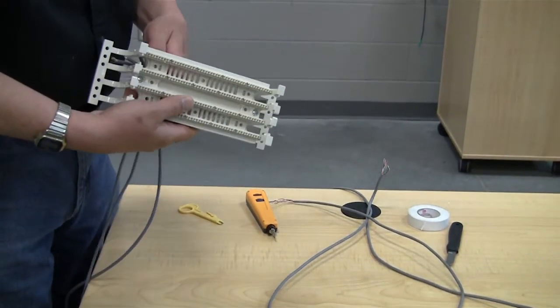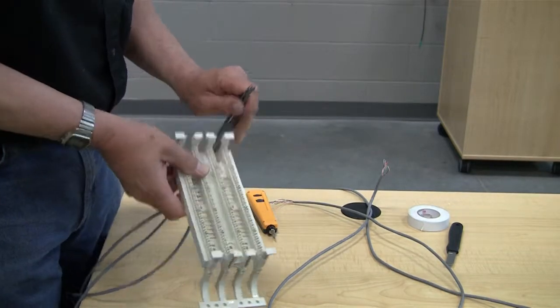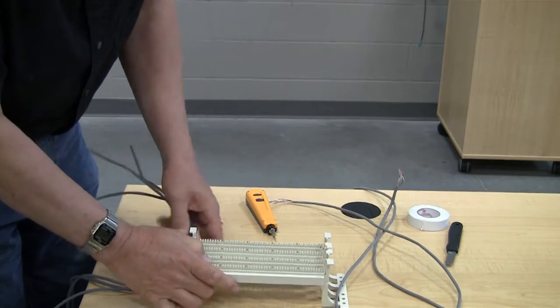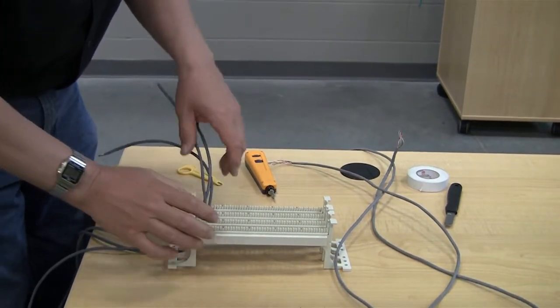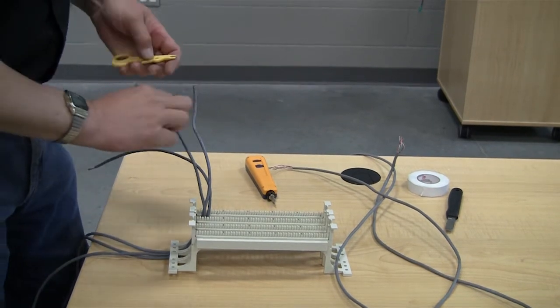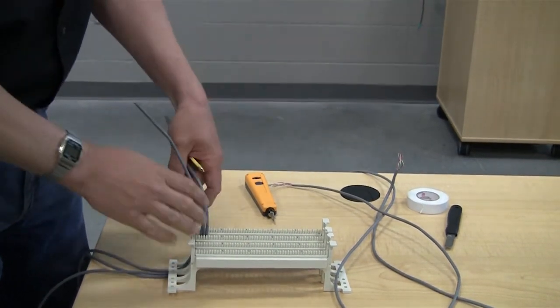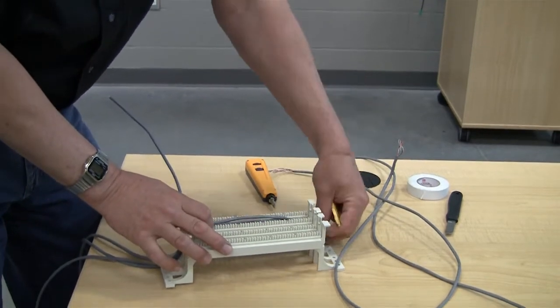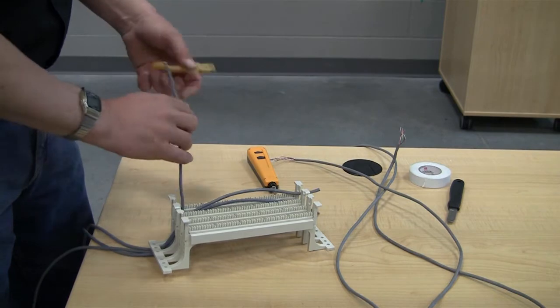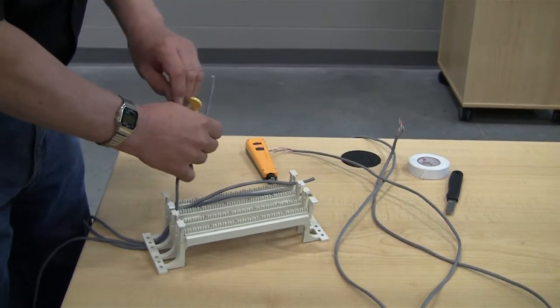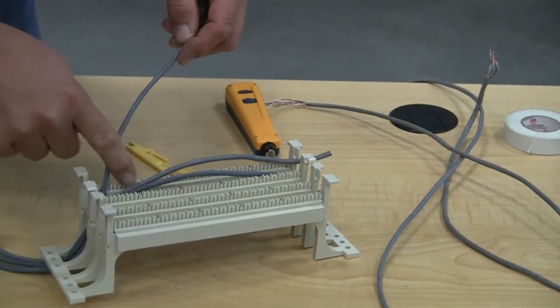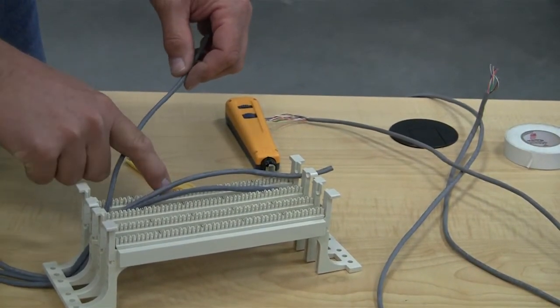The difference here also from the 25 pair to the data cabling on the cat5 cable is we want to keep our twist rates, so we have to have less than a half inch untwisted. We also want to keep the integrity of the cable, so what we're going to do is keep the jacket allowed to come up into the place where we're going to punch down onto the grid.